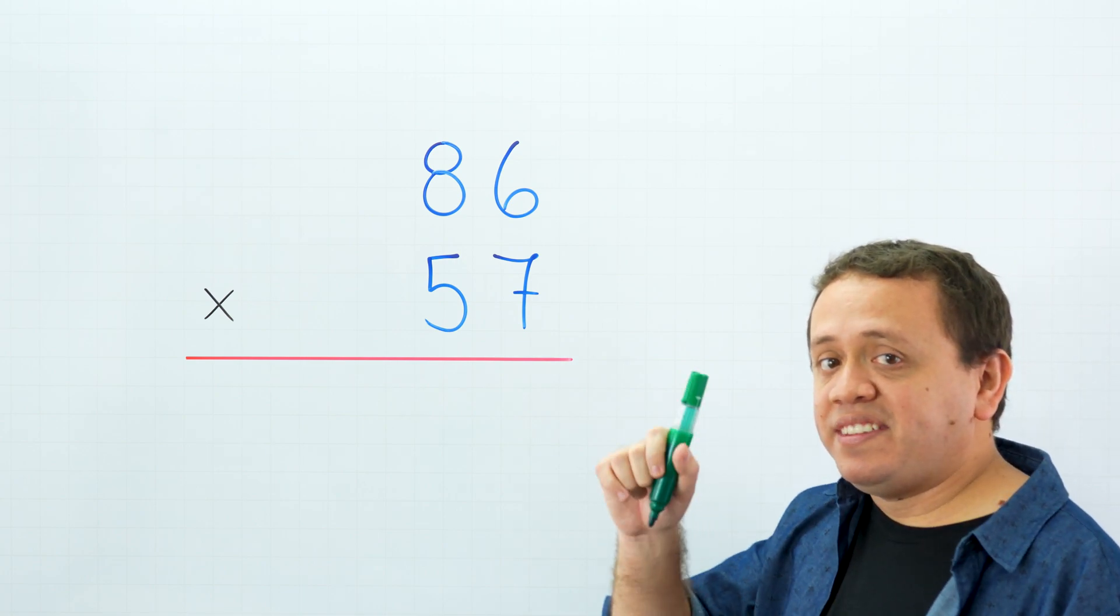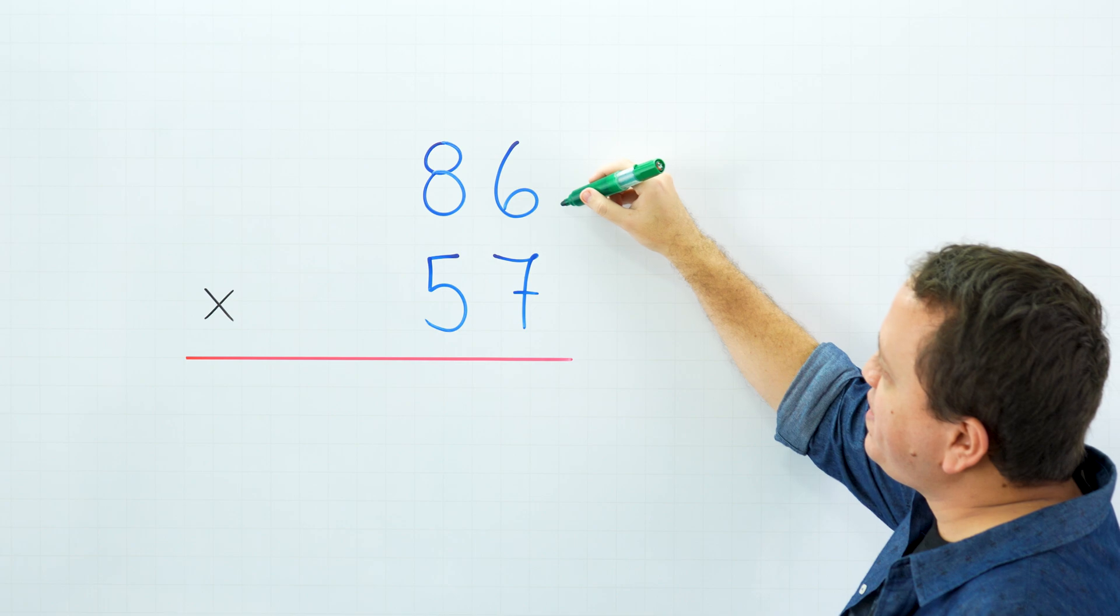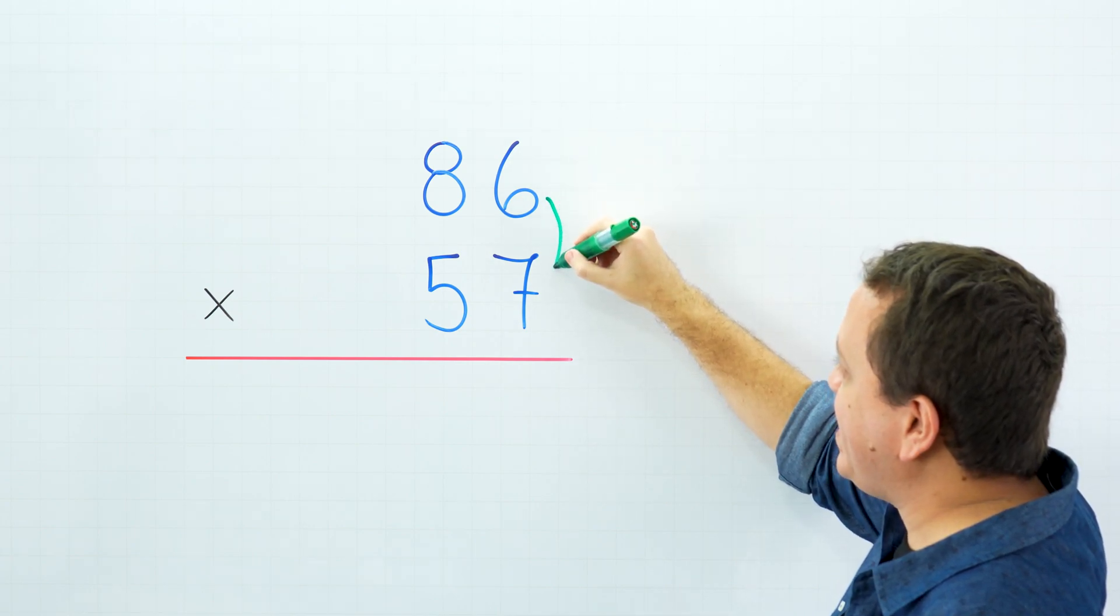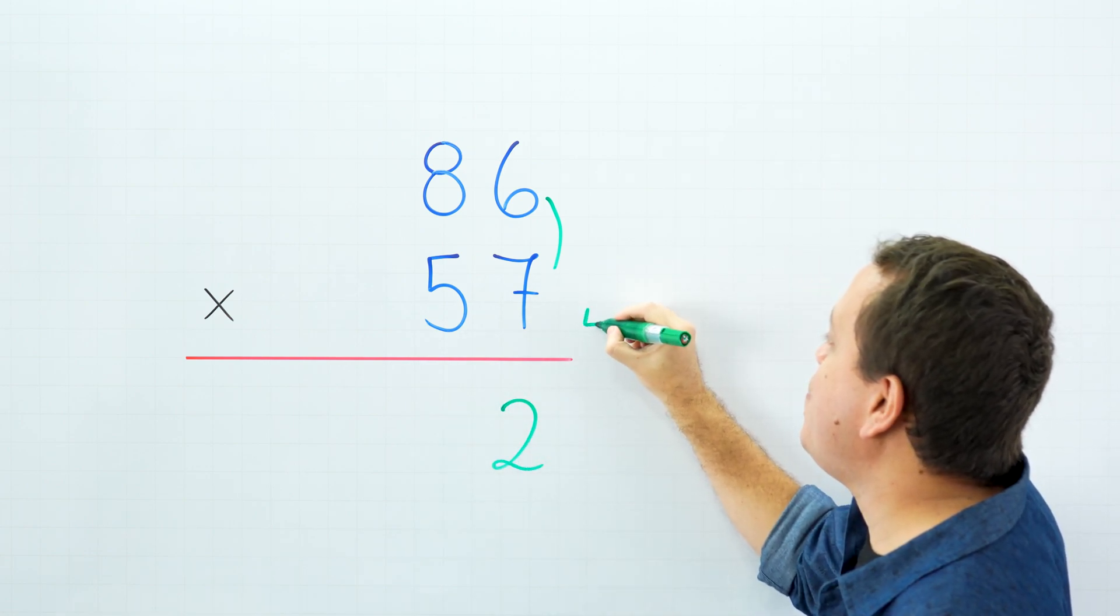Get ready for the last example. This time we will go faster. 86 times 57. First, we are going to multiply the digits on the right side, and 6 times 7 is 42. I'm going to write the 2 and carry the 4.